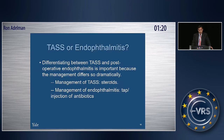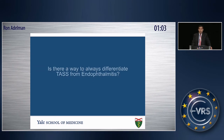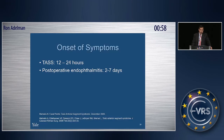Differentiating TASS from endophthalmitis is critical because TASS is treated with steroids, while endophthalmitis requires antibiotics — giving the wrong agent makes the disease worse. TASS happens shortly after surgery, within 12 to 24 hours, whereas post-operative endophthalmitis typically takes two to seven days to develop.